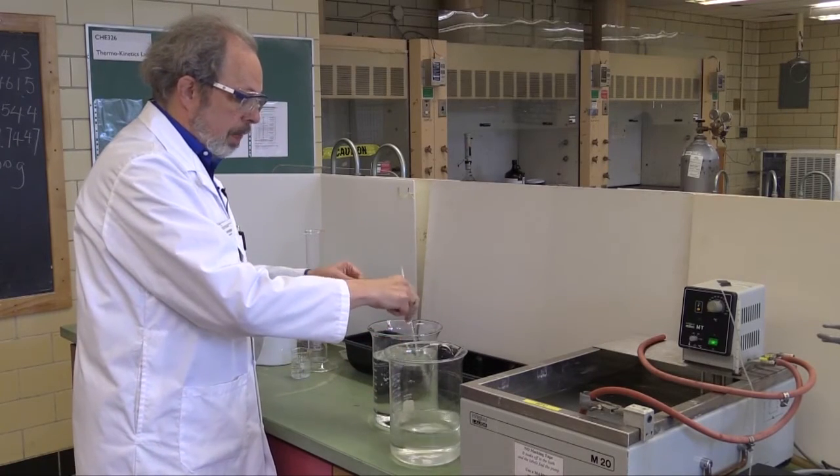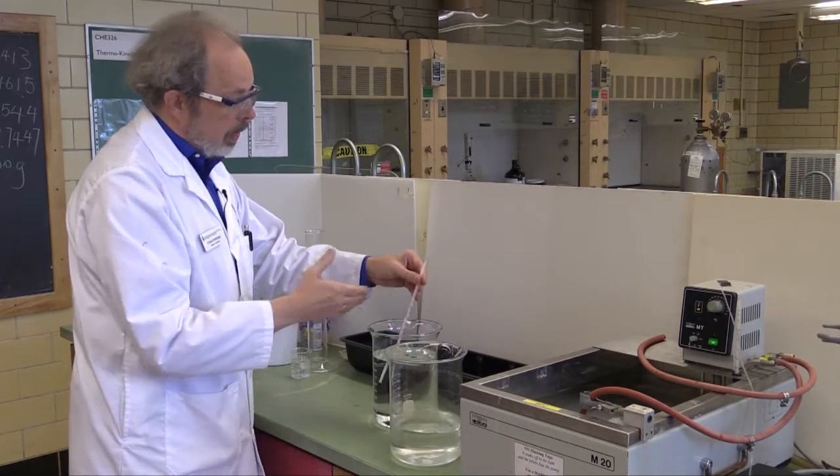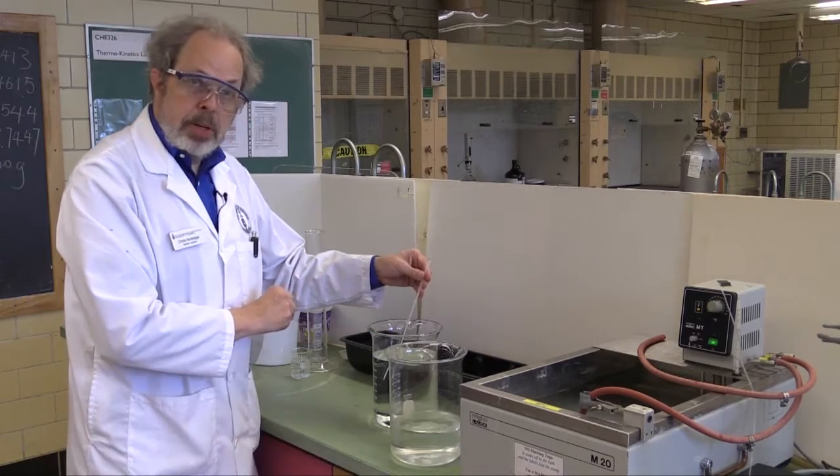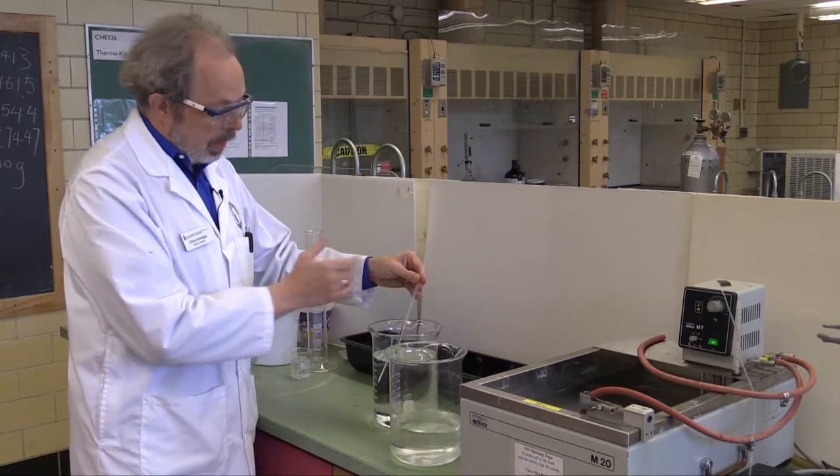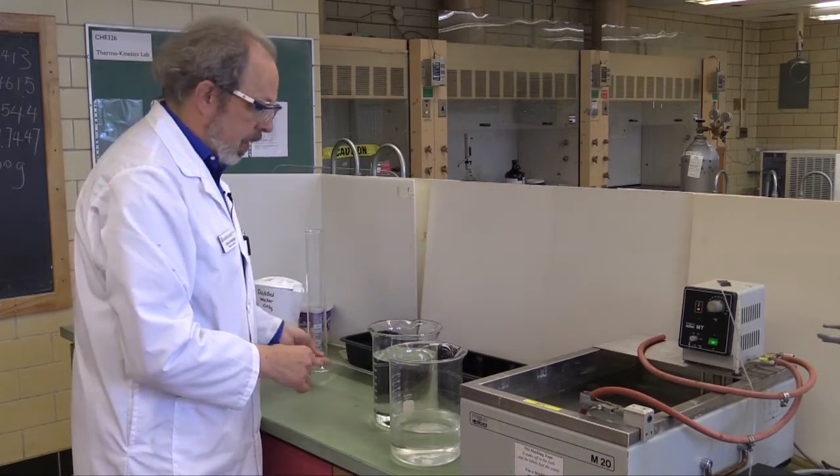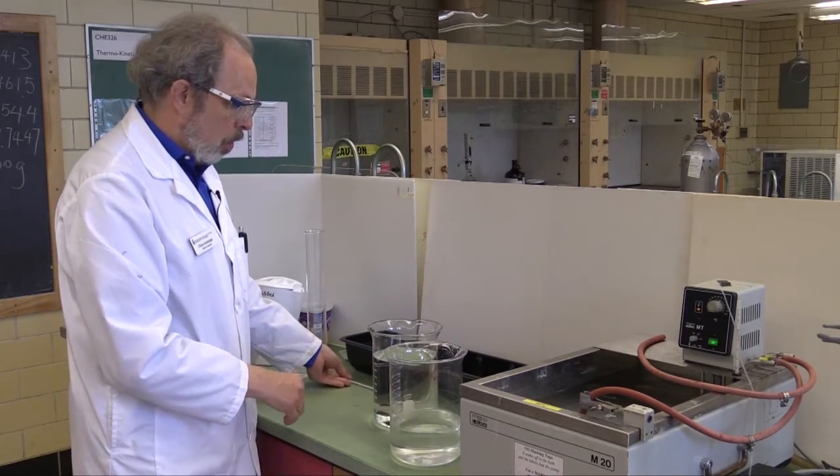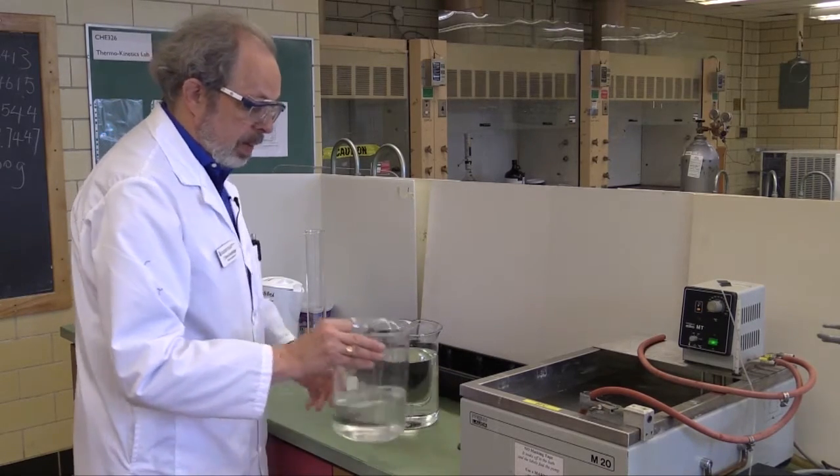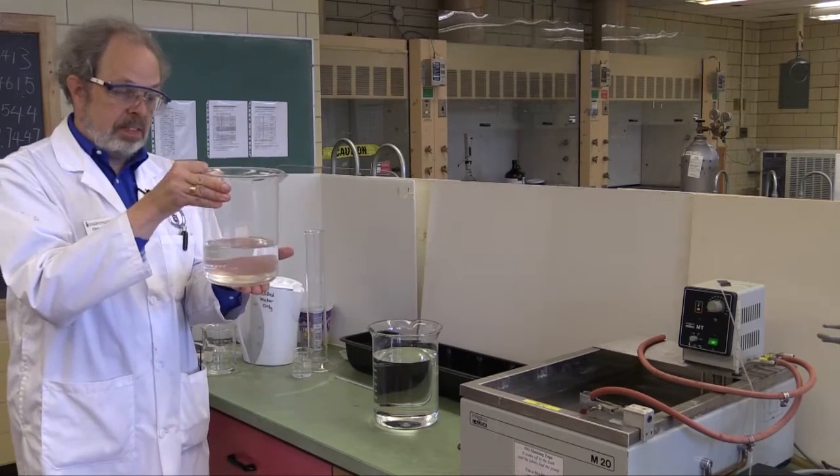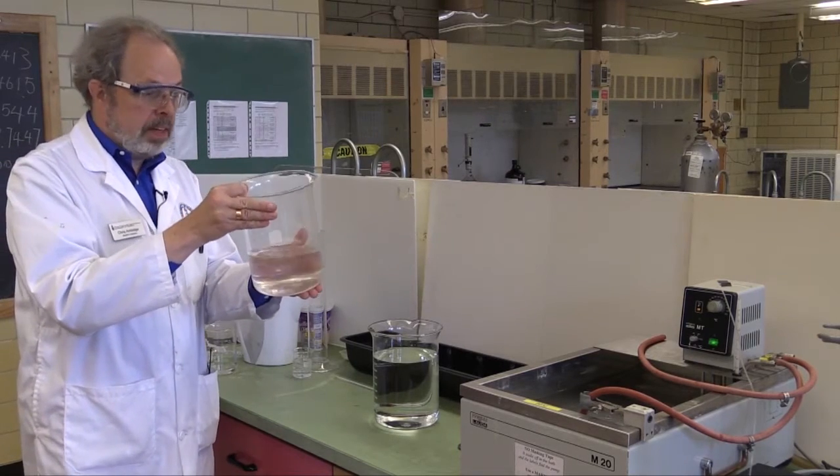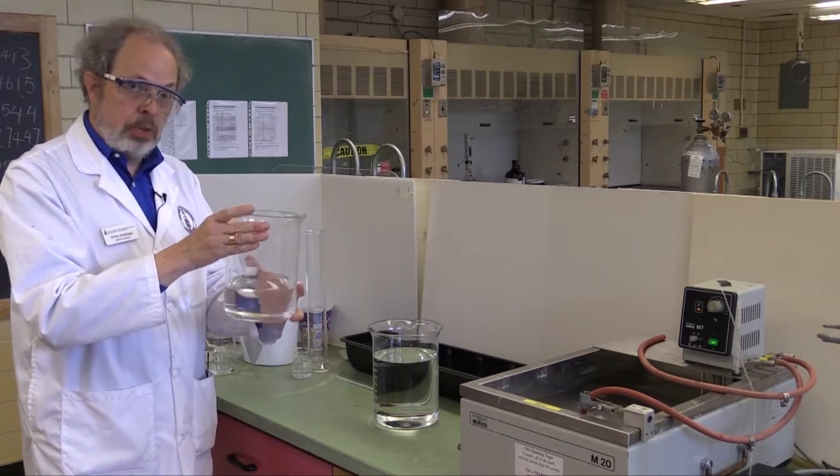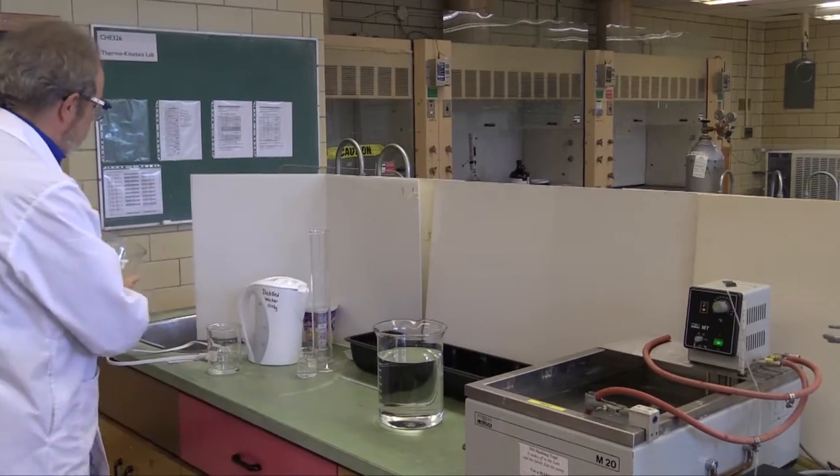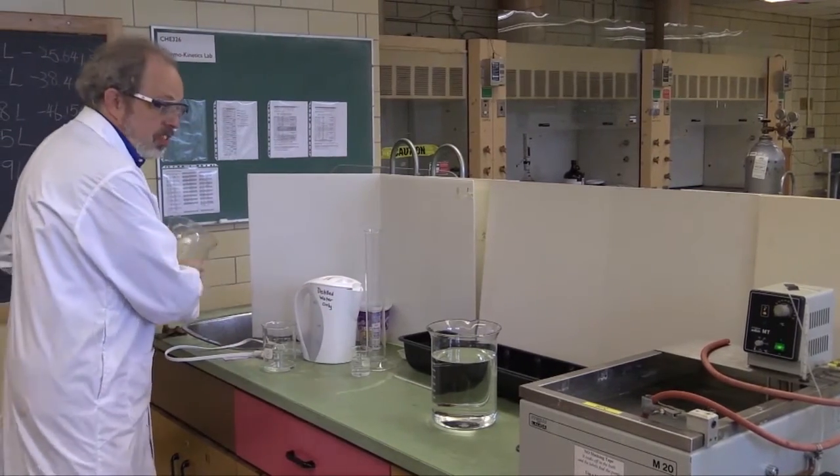Keep adding until you get to about 65 degrees. So, you would check that by stirring it to get it uniform, and check the temperature on the thermometer. Let's assume I've got this to 65 degrees, and I've got more than 2,500 mils. I'm going to use this beaker as the vessel for the solution. I'm going to empty this now.